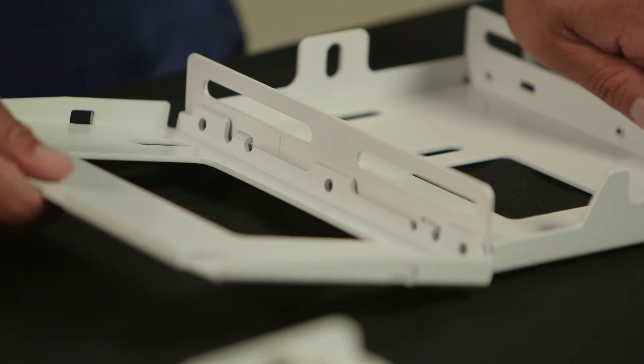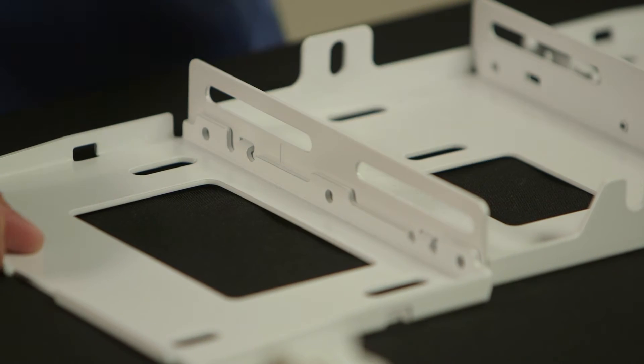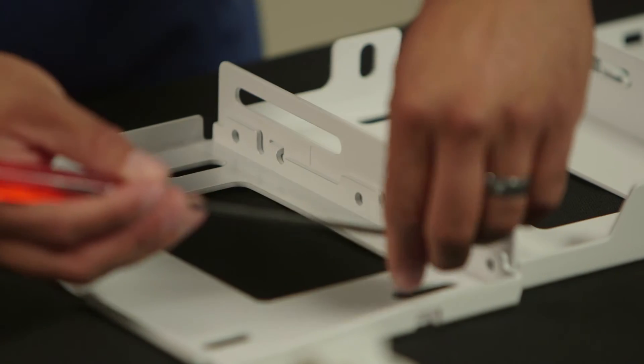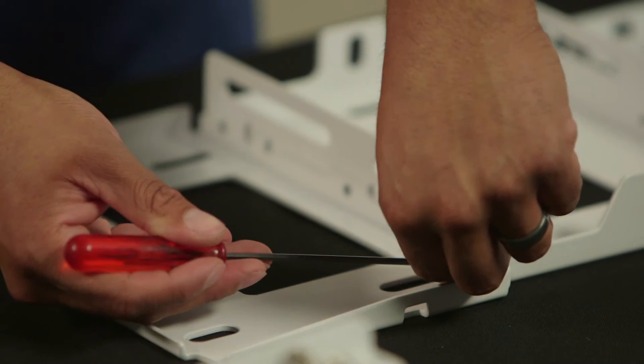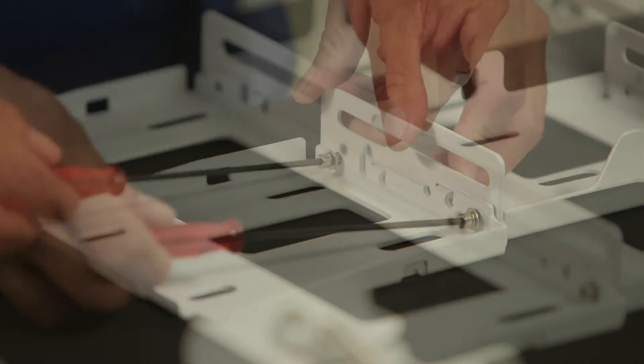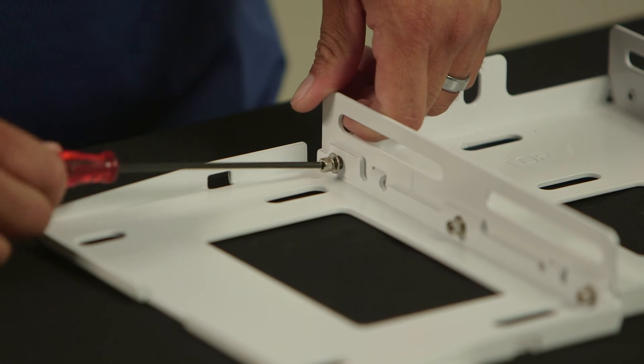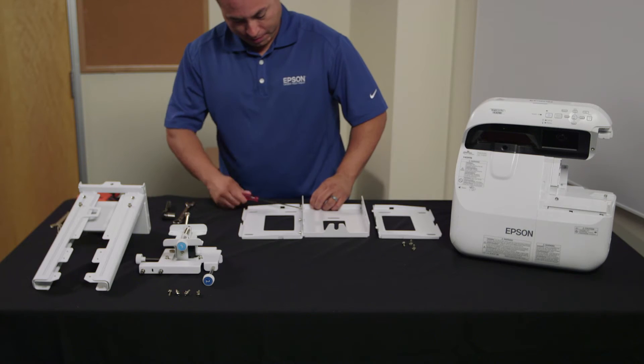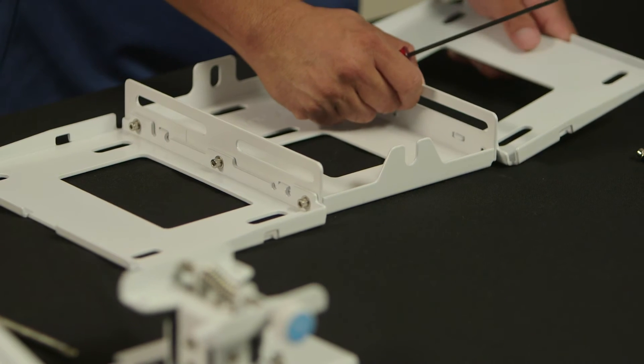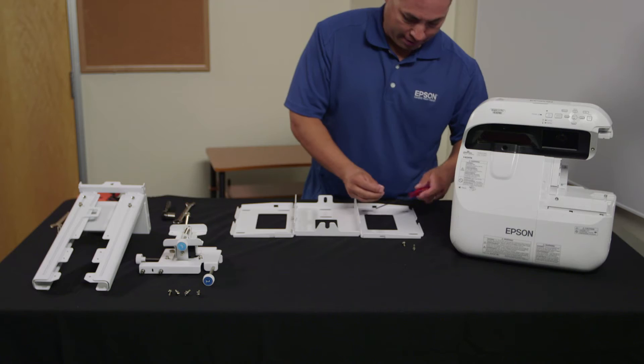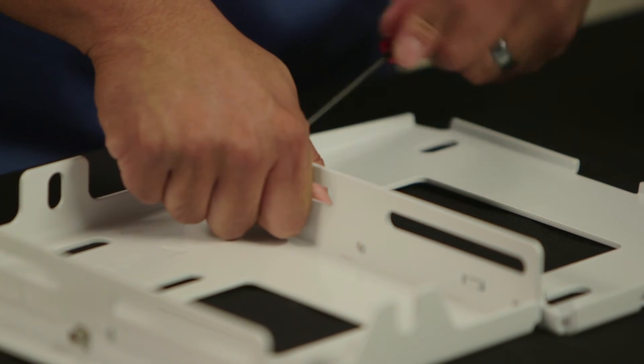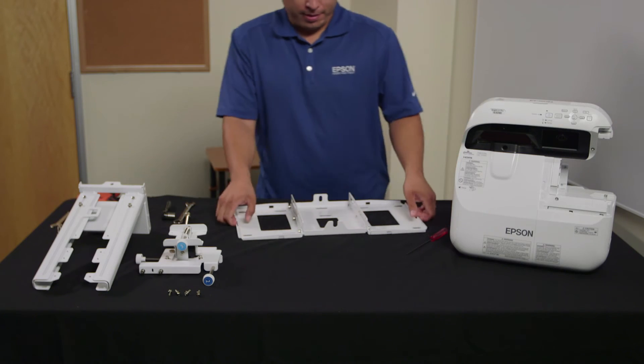Now we will assemble the wall plate. Take the three piece assembly plate and attach it with the screws found in the hardware bag.